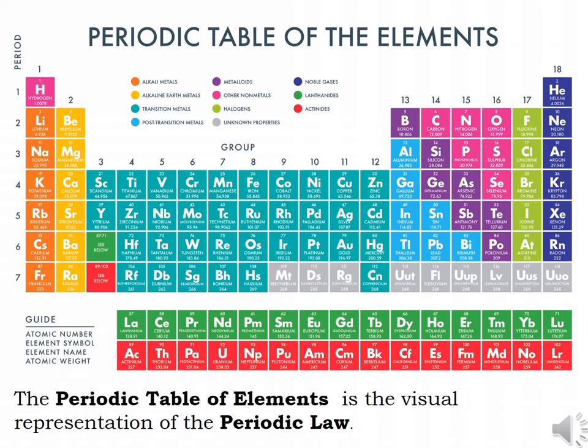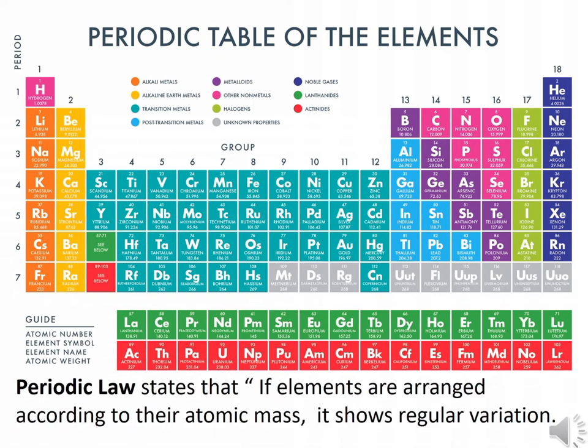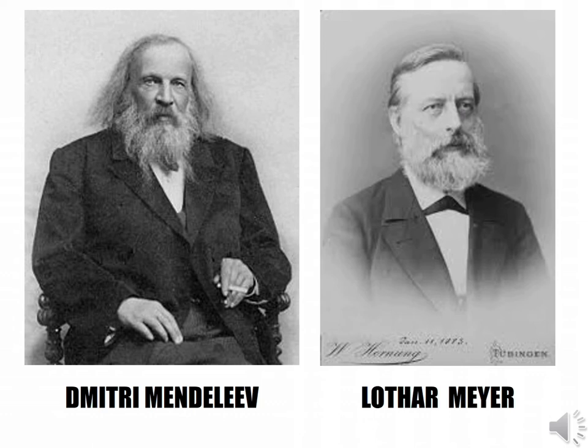The periodic table of elements is the visual representation of the periodic law. Periodic law states that if elements are arranged according to their atomic mass, it shows regular variation. It was discovered by Dmitry Mendeleev and Lothar Meyer around 1869.